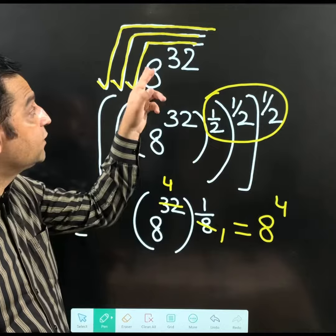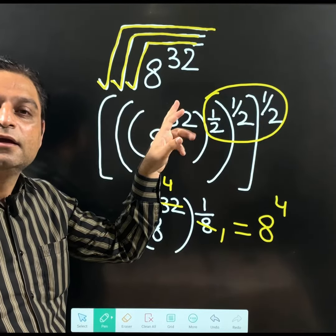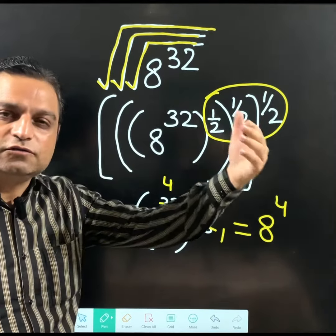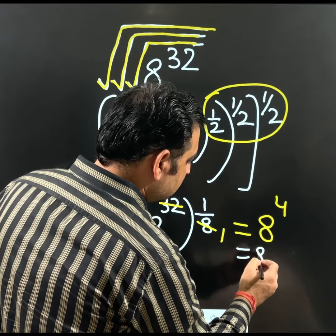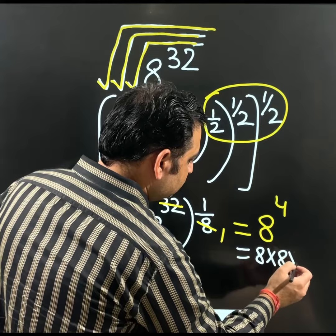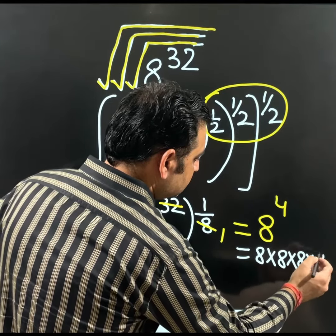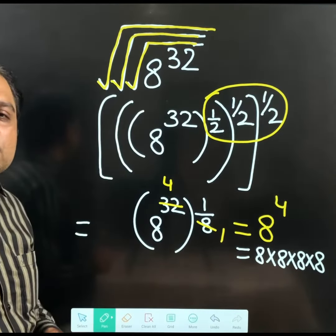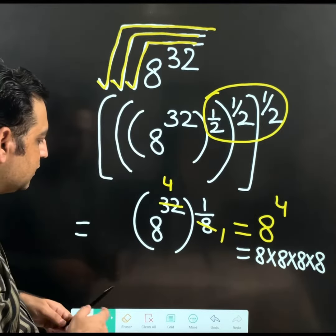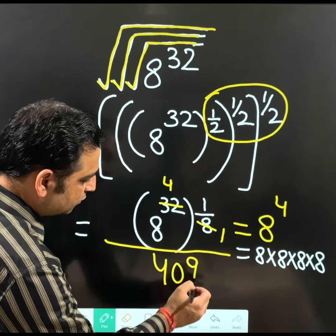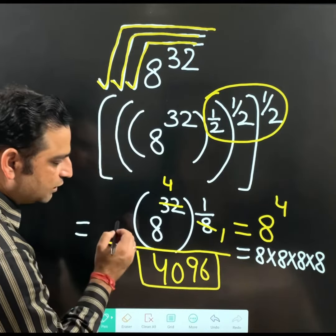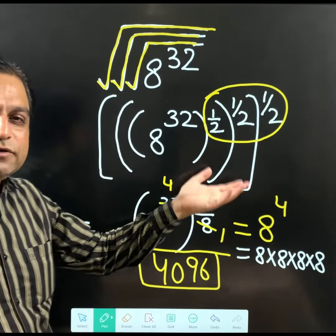8 to the power 4 is final answer for this question. And which you can further solve it. 8 to the power 4 means when 8 is multiplied how many times? 4 times. 8 is multiplied 4 times. And when you multiply 8 4 times, your final answer would be 4096. That you can calculate yourself.